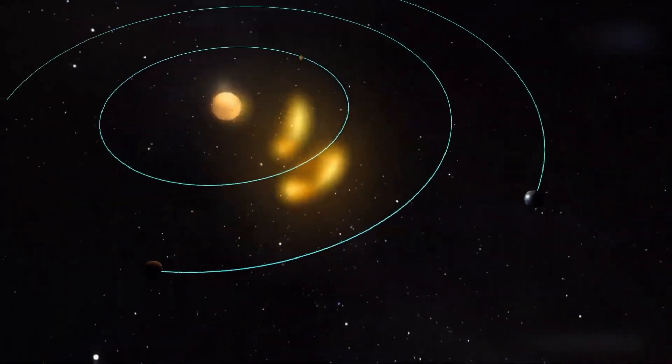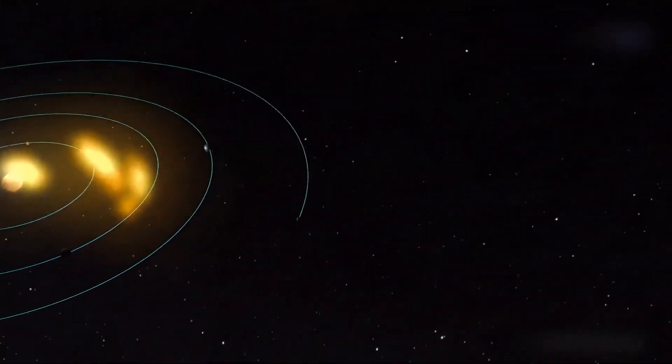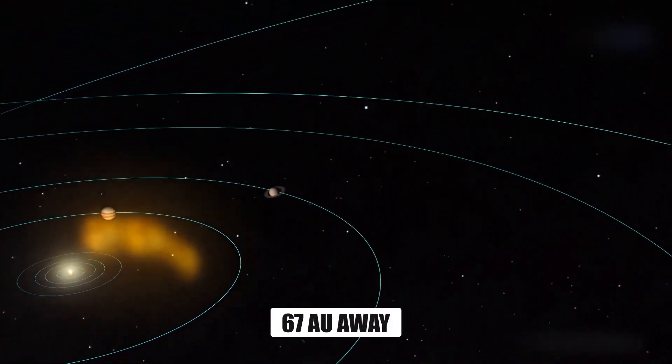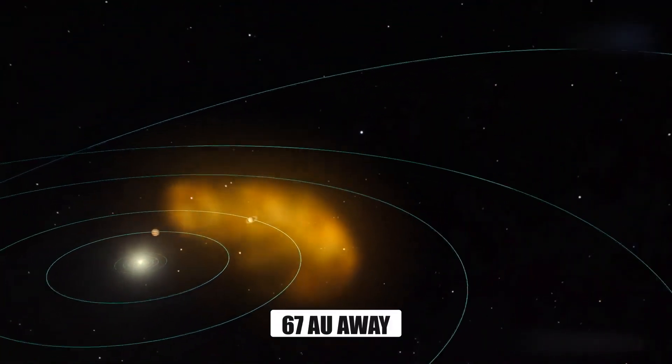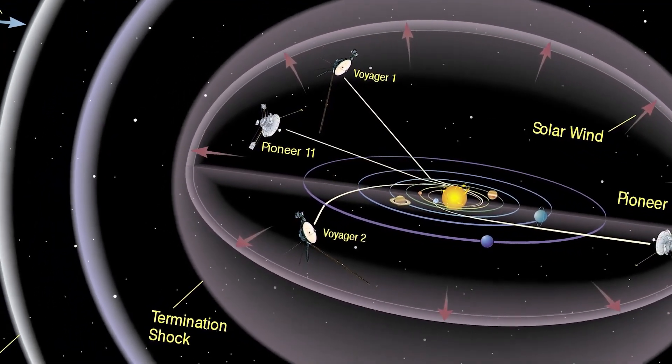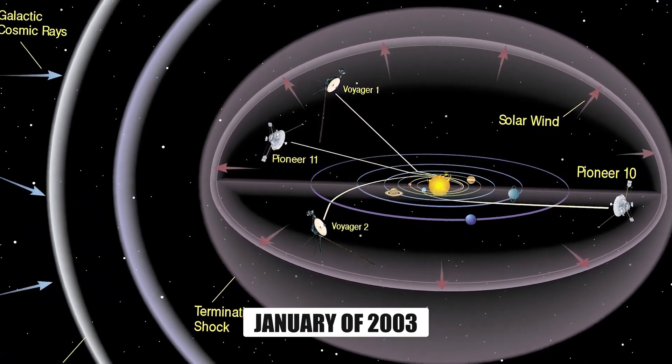Years of data on solar wind activity have been gathered by the Pioneer probes since their 1972 launch. However, Pioneer 10 sent its final coherent signal back to Earth in January of 2003.